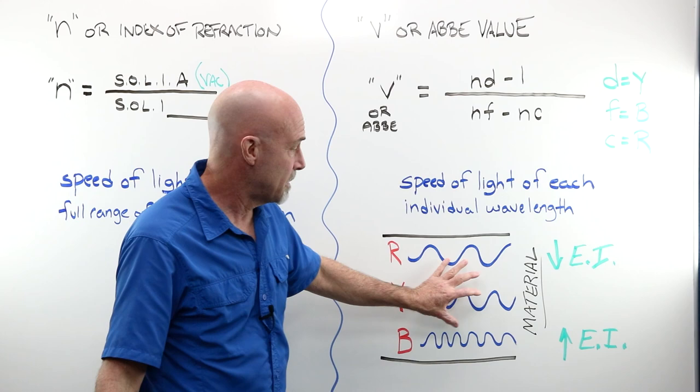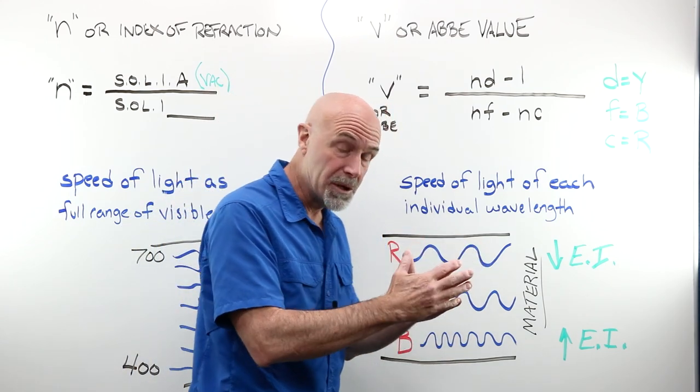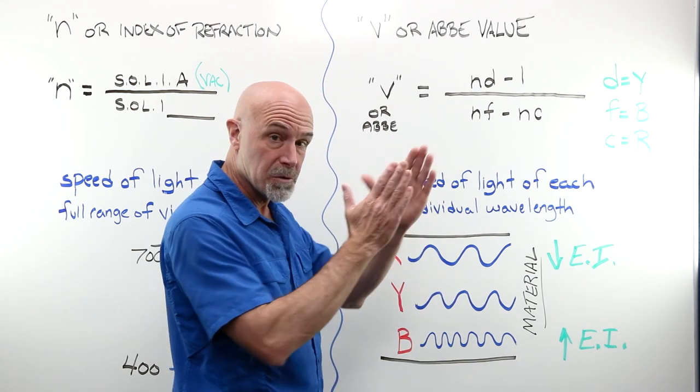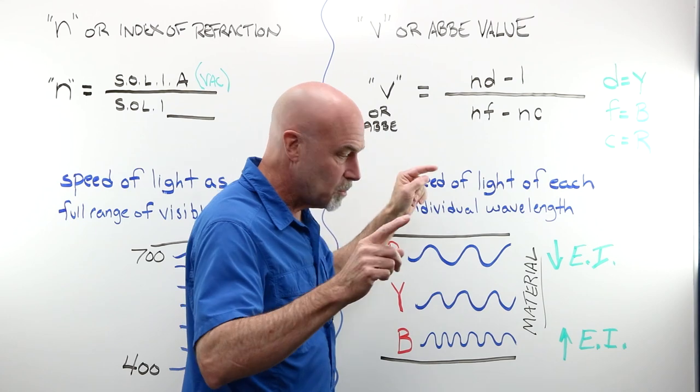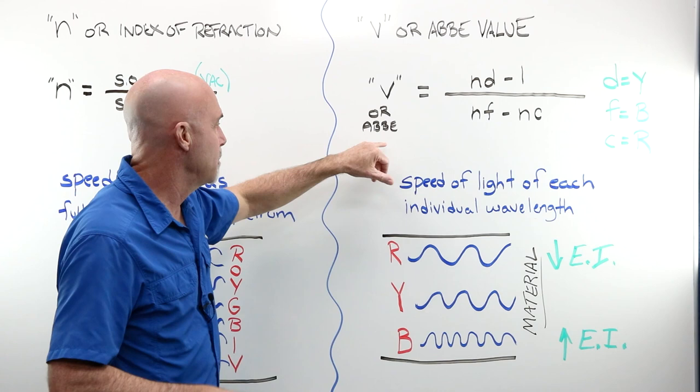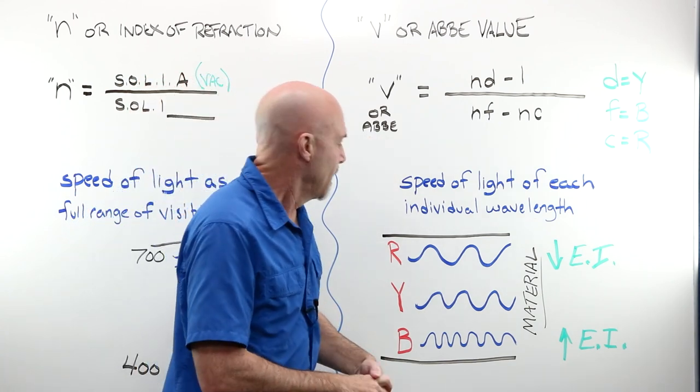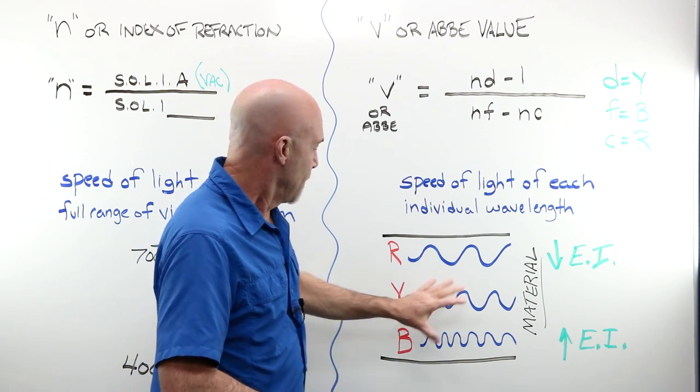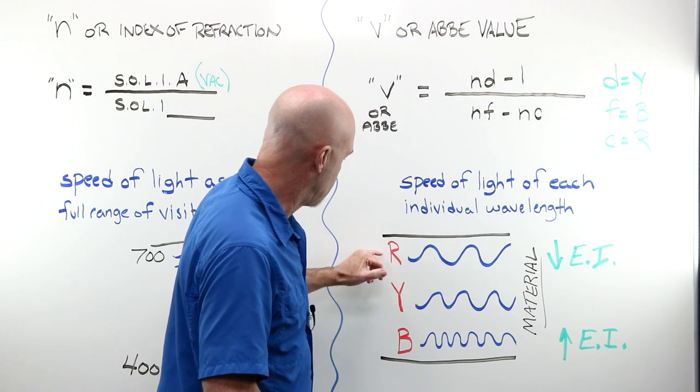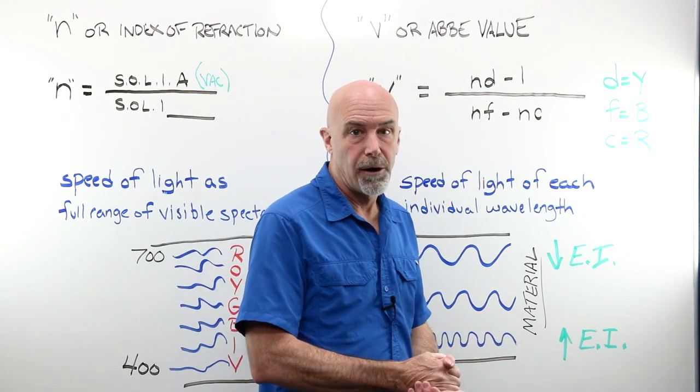So as this light band passes through, my red actually passes through faster than blue does. Completely and totally imperceptible to the human eye. But once we throw a lens, a true lens profile, a prism, and we look at that lens from optical center out, that's when things get ugly. And that's when Abbe matters.